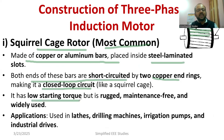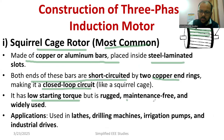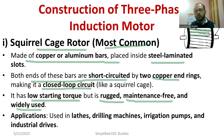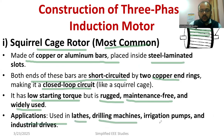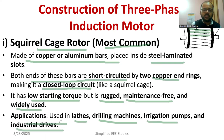The squirrel cage induction motor has less starting torque but is completely maintenance-free, has a very rugged construction, and is widely used due to its very high efficiency. Applications include lathe machines, drilling machines, solar water pumping systems, and industrial drives. However, the major setback is its low starting torque.